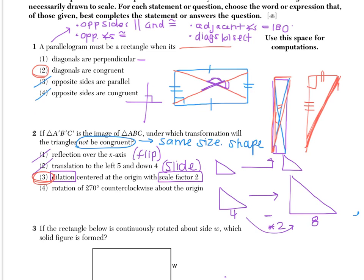If you look at choice four, it's a rotation. Rotation is the same as a turn. And our keyword for dilation is a shrink or grow.